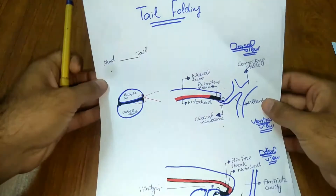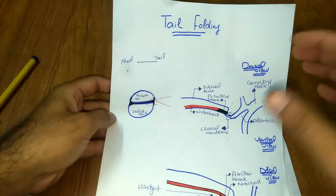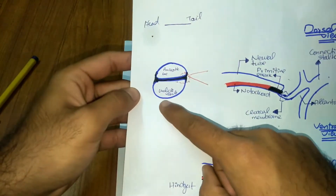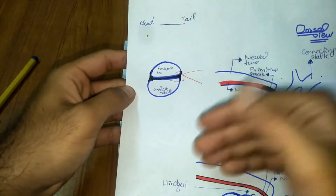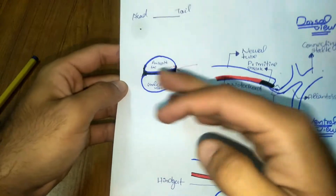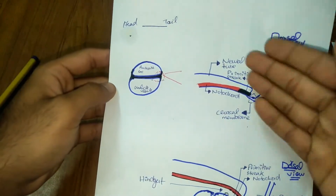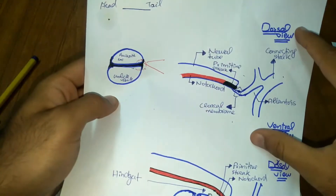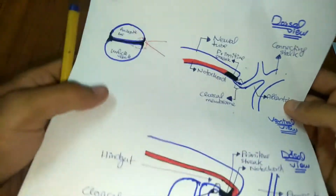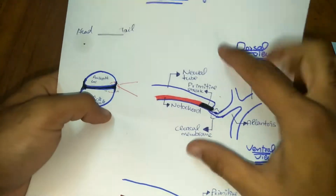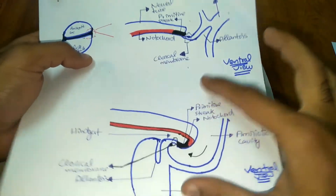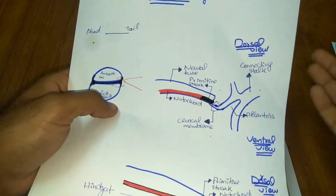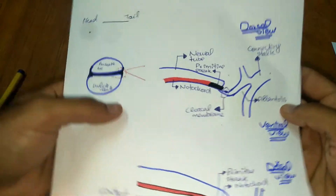What I have drawn here is a diagram drawn in KLM. We have an embryo divided in the median plane — this is the head region and this is the tail region. This is a lateral view of the embryo being divided into the median plane, and the tail region is being magnified here. This is a before-folding magnified view and this is an after-folding magnified view. This is the dorsal view and this is the ventral view.